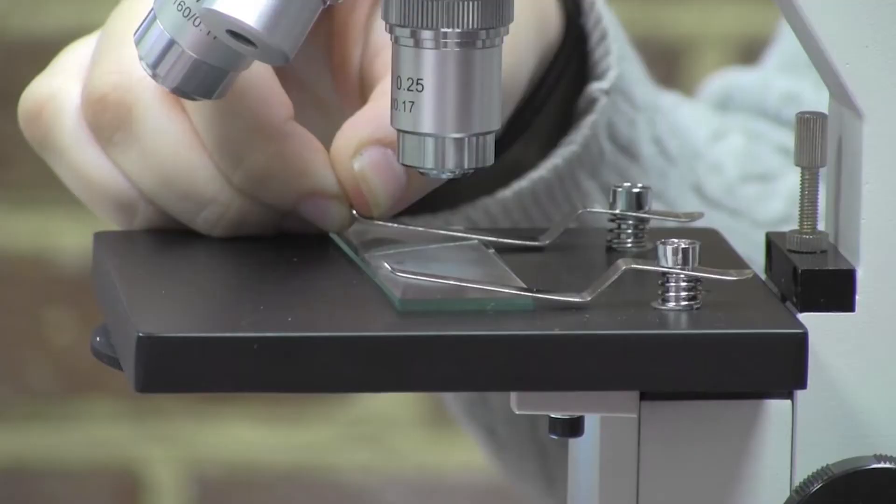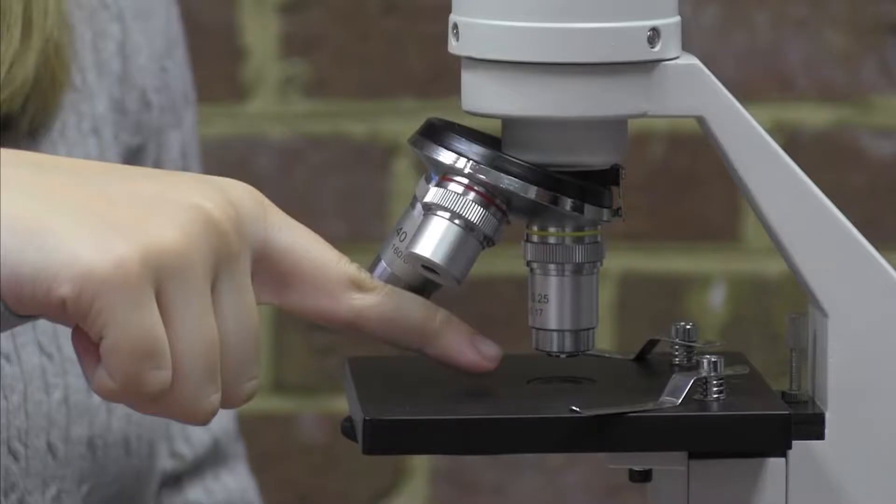Stage clips hold the slide in place as you observe. The stage has a hole in it. The size and shape of the hole is controlled by the iris diaphragm.